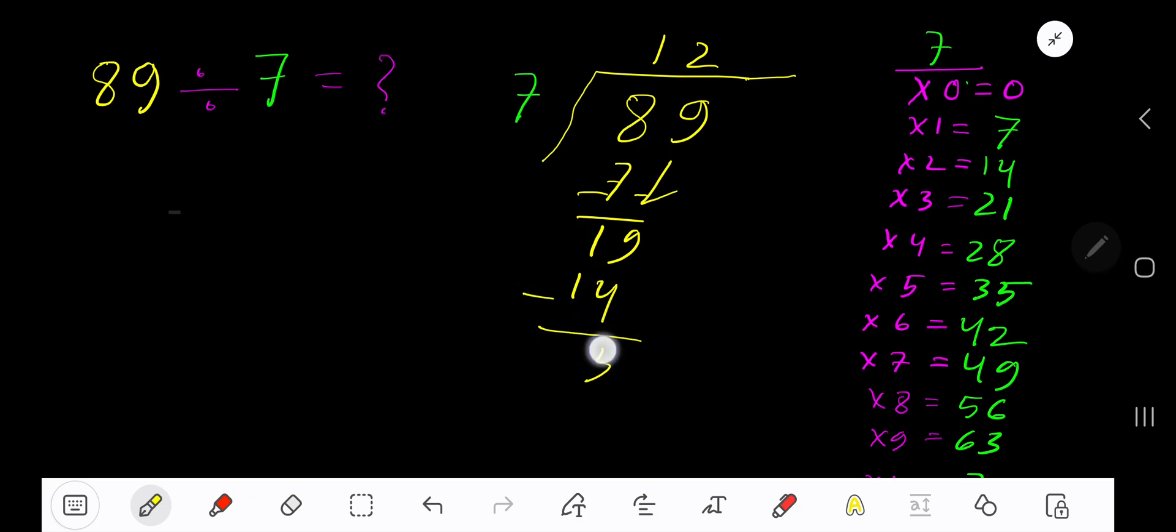So our answer is 12 remainder 5. If you want to write your answer in decimal form, convert this whole number into a decimal number.